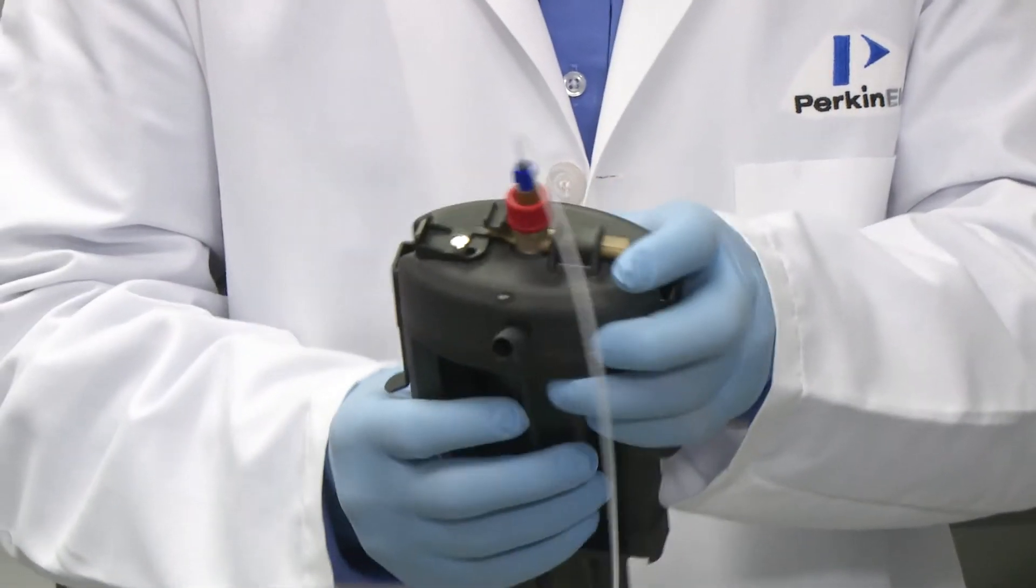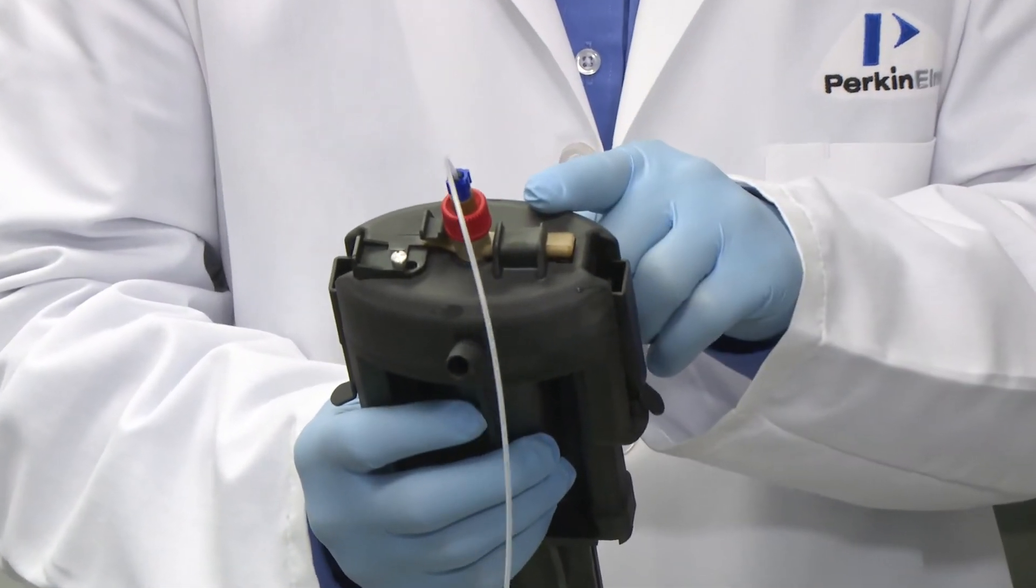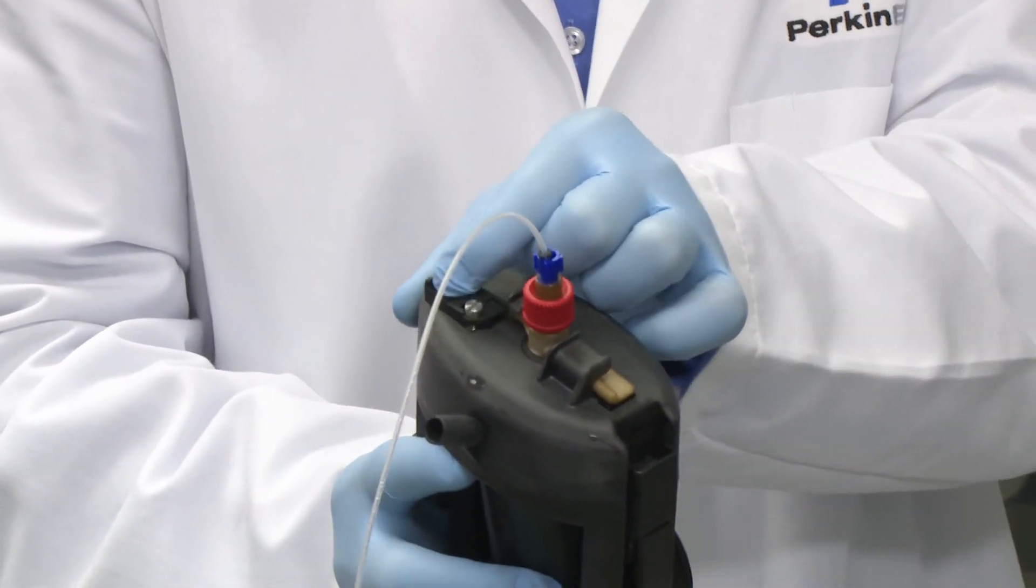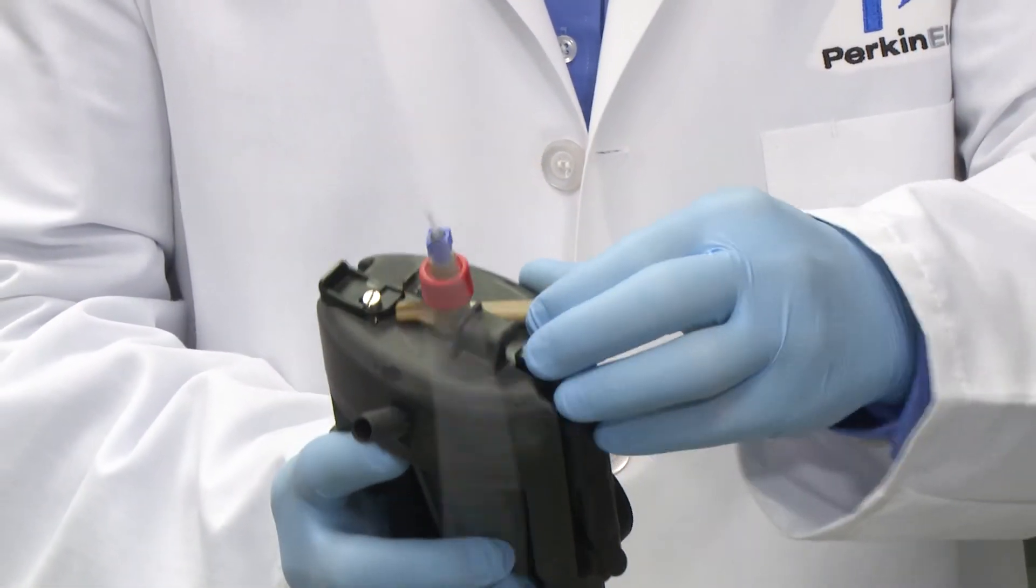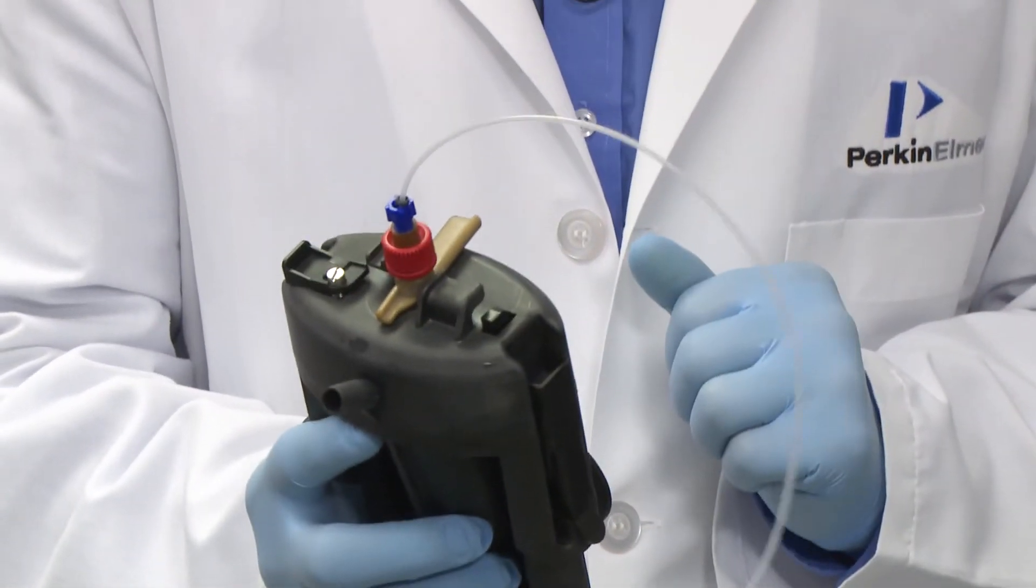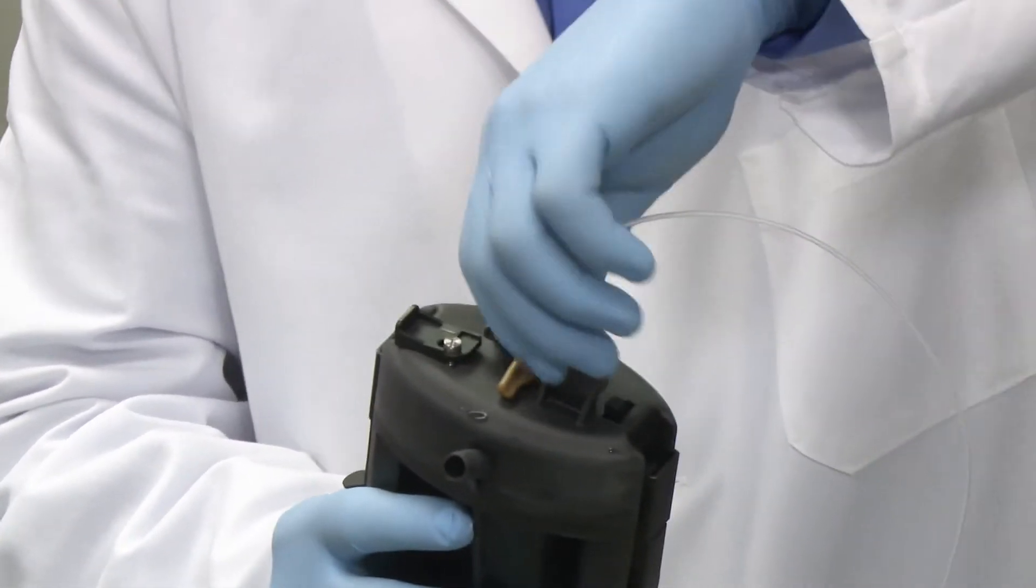Next, you are going to remove the nebulizer from the end cap. Do so by unlocking the nebulizer and rotating the arm 90 degrees to the unlocked position and pull the nebulizer out.